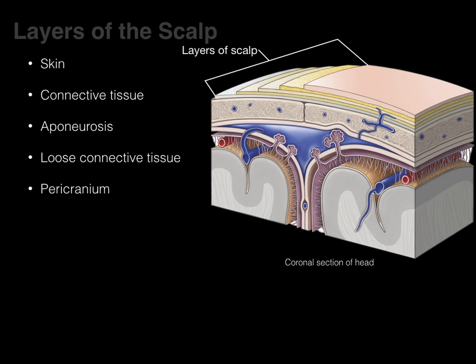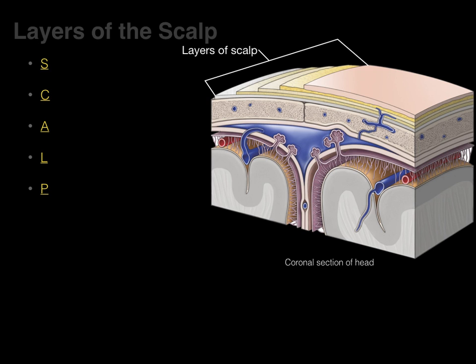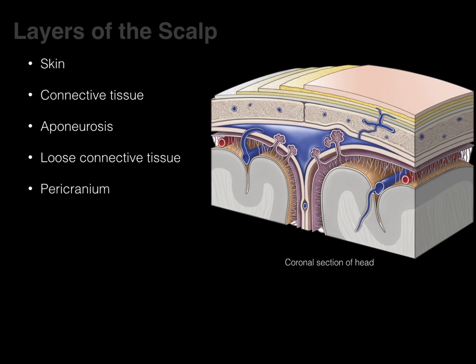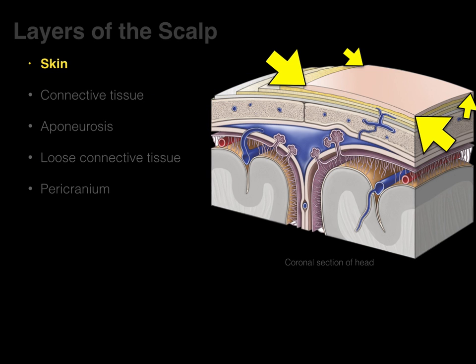How do you remember these five layers? The first letter of each spells SCALP — from superficial to deep, those are all the layers. Let's go through each one by one. First: skin.